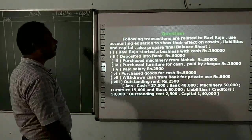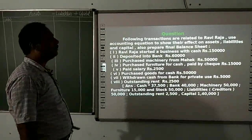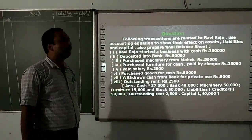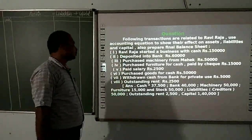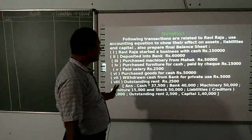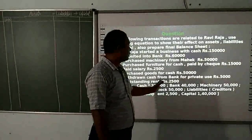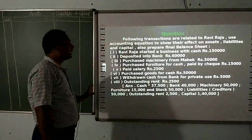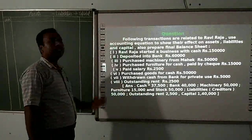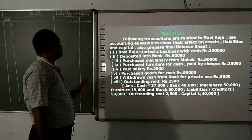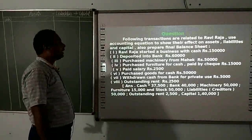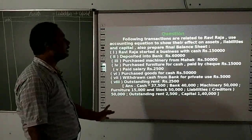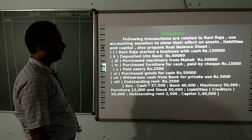For the withdrawal of Rs. 5,000, bank will reduce and capital will also reduce. Outstanding rent is Rs. 2,500 — a liability column will be created and capital will reduce by 2,500.